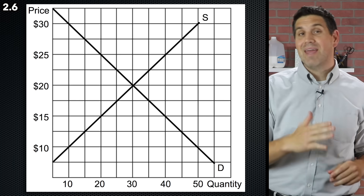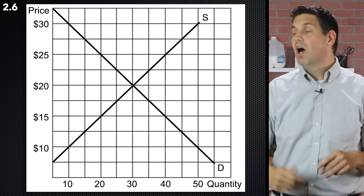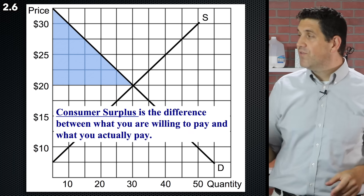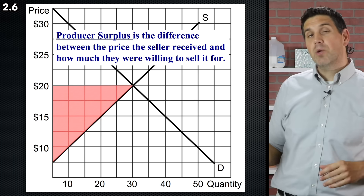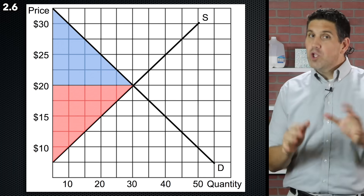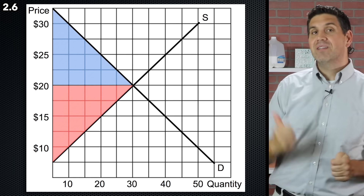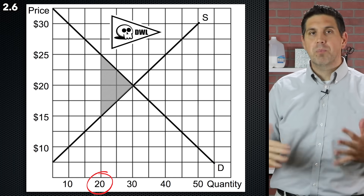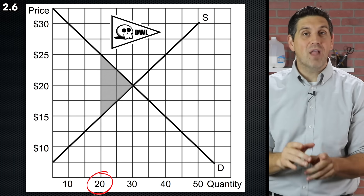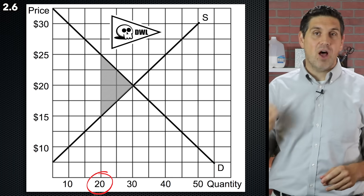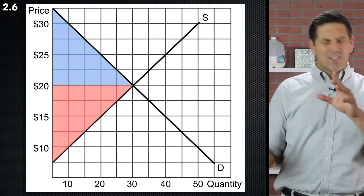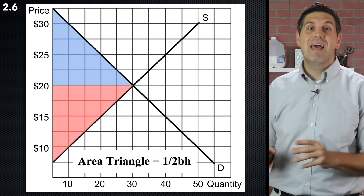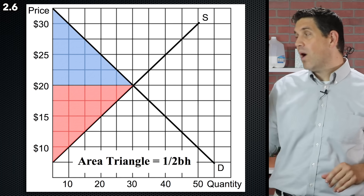In topic 2.6, we finally put demand and supply together with equilibrium, consumer surplus, and producer surplus. Consumer surplus is the difference between what people are willing to pay and what they actually paid. Producer surplus is the difference between the price and what sellers were actually willing to sell it for. Together they give total surplus — when maximized, the market is efficient. If we produce less, we get deadweight loss, which is lost consumer and producer surplus. Make sure you can calculate these areas using one-half base times height.